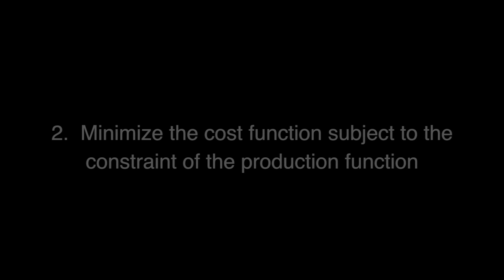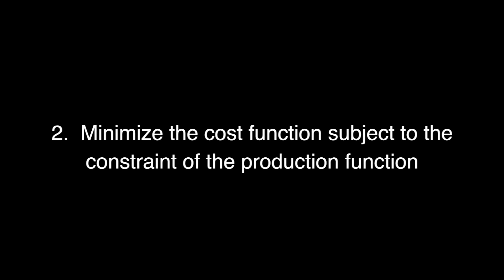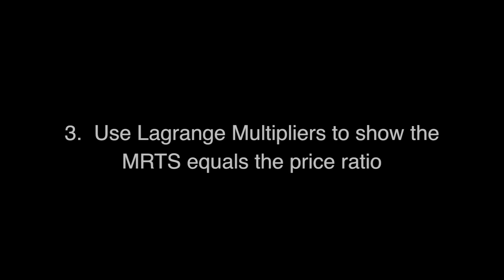To summarize, first we examined the firm and figured out what its cost function was given a set of inputs. Second, we wanted to optimize this cost function by minimizing it given the constraint of the production function. Third, we used Lagrange multipliers to show that the MRTS equals the price ratio. Finally, we used this to find the optimal inputs and the total cost as a function of q.